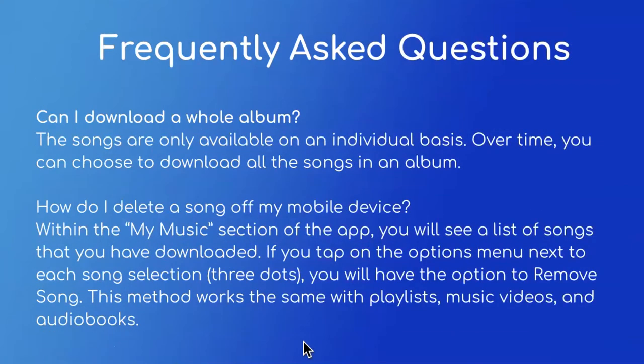Another question: can I download an entire album? Songs are sadly only available on an individual basis, meaning you can choose to download all songs in an album over time, but you can't do a mass download all at once. How do I delete a song off my mobile device? Go to the My Music section of the app, tap the options menu — the three dots icon — next to each song, and you will see the option to remove the song. This method works the same with playlists, music videos, and audiobooks.